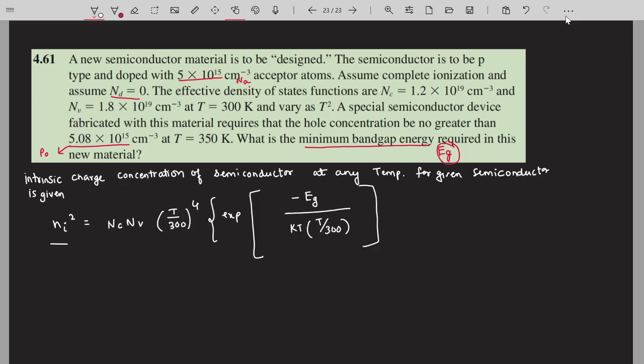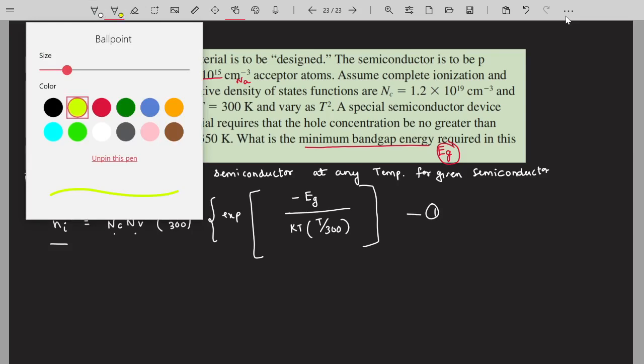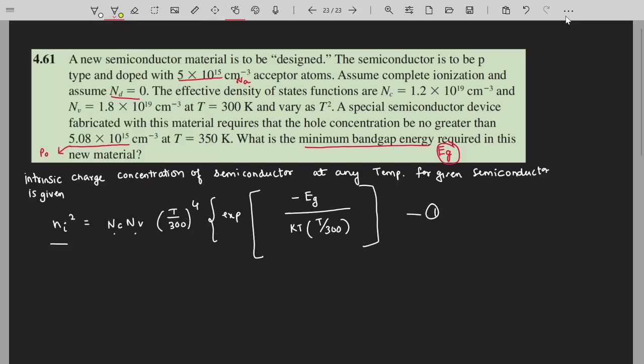We have Nc, we have Nv, we know T, and we have to calculate Eg. This is our equation number one, but we don't know what is ni. We know that hole concentration P0 is no greater than 5.08×10^15.